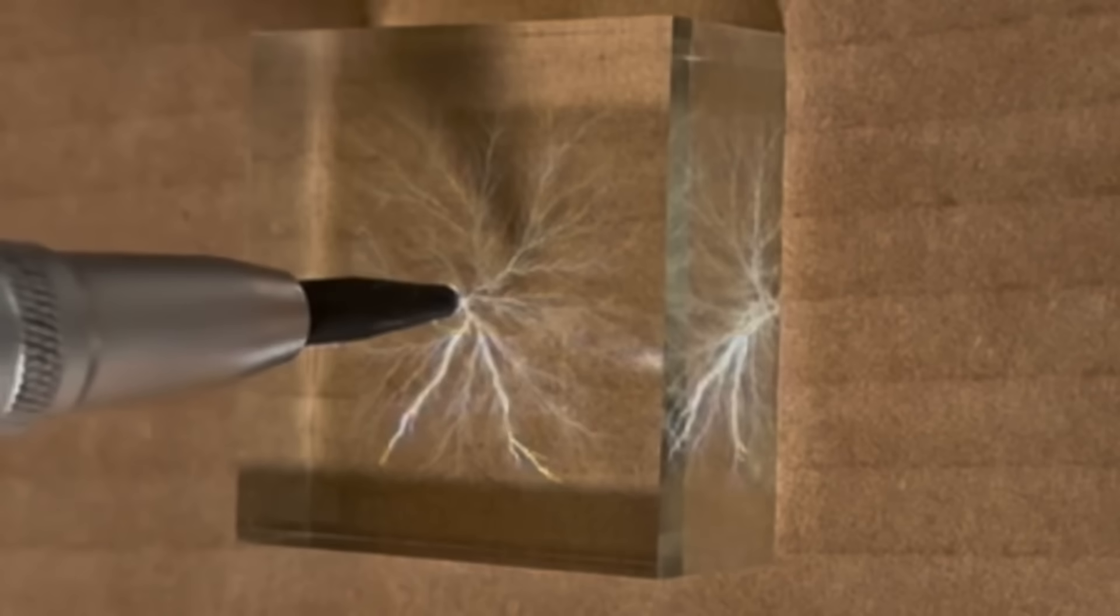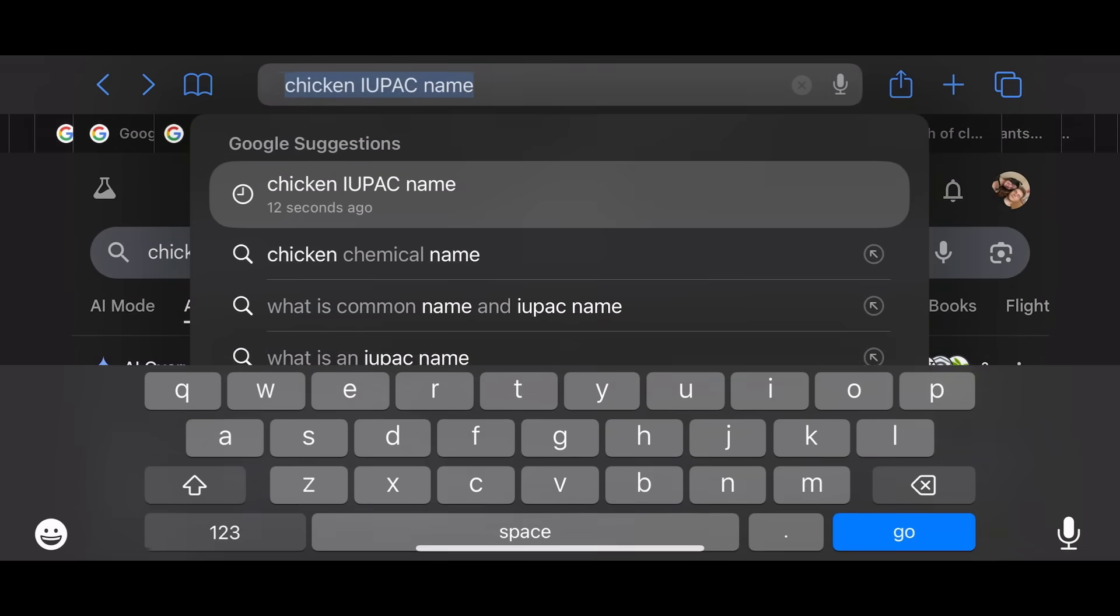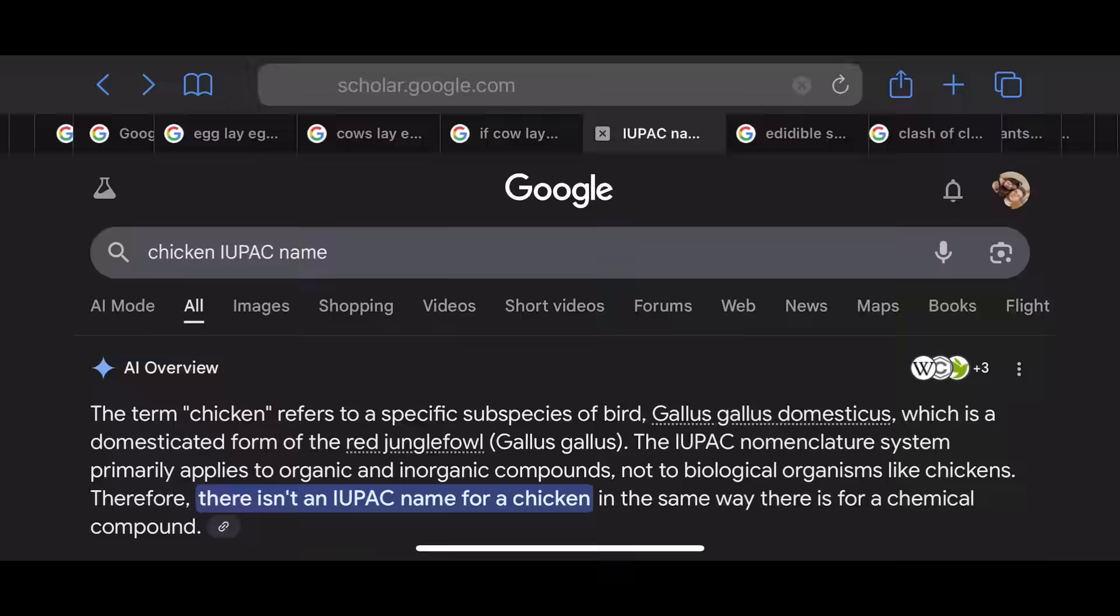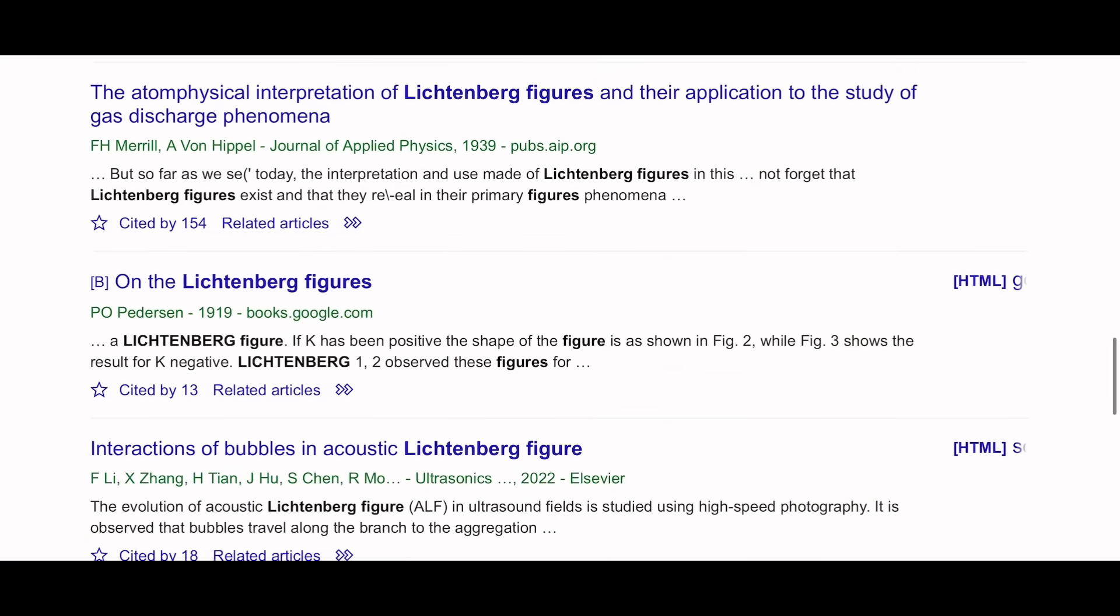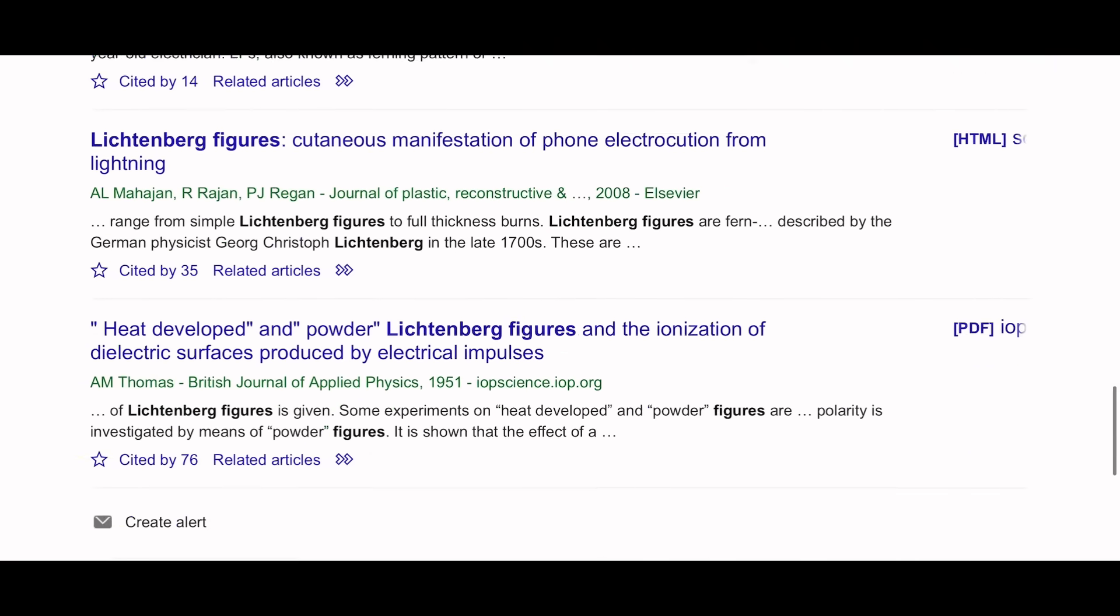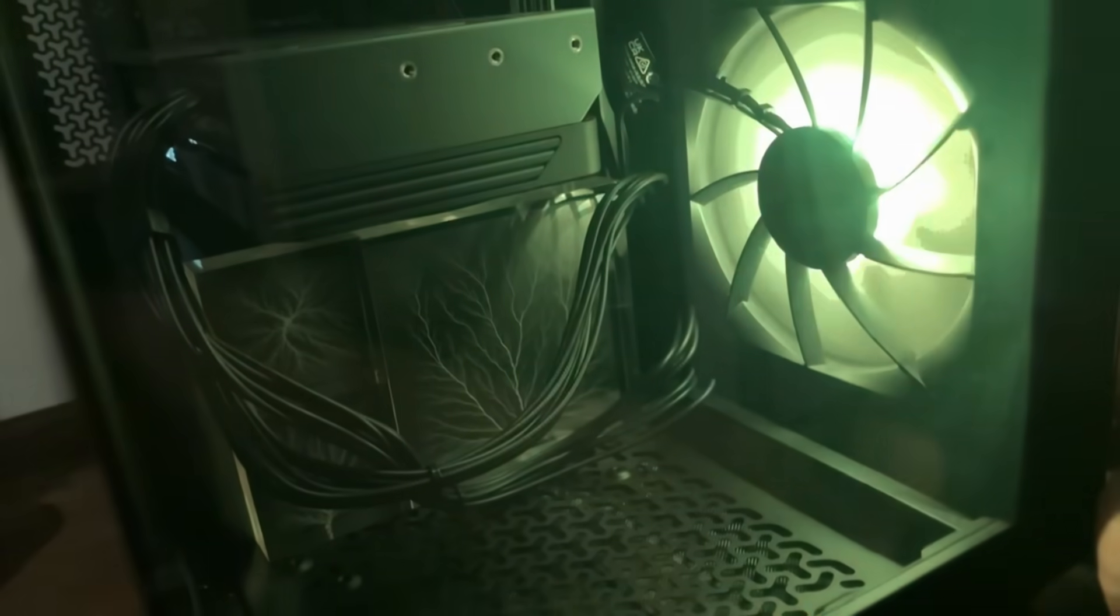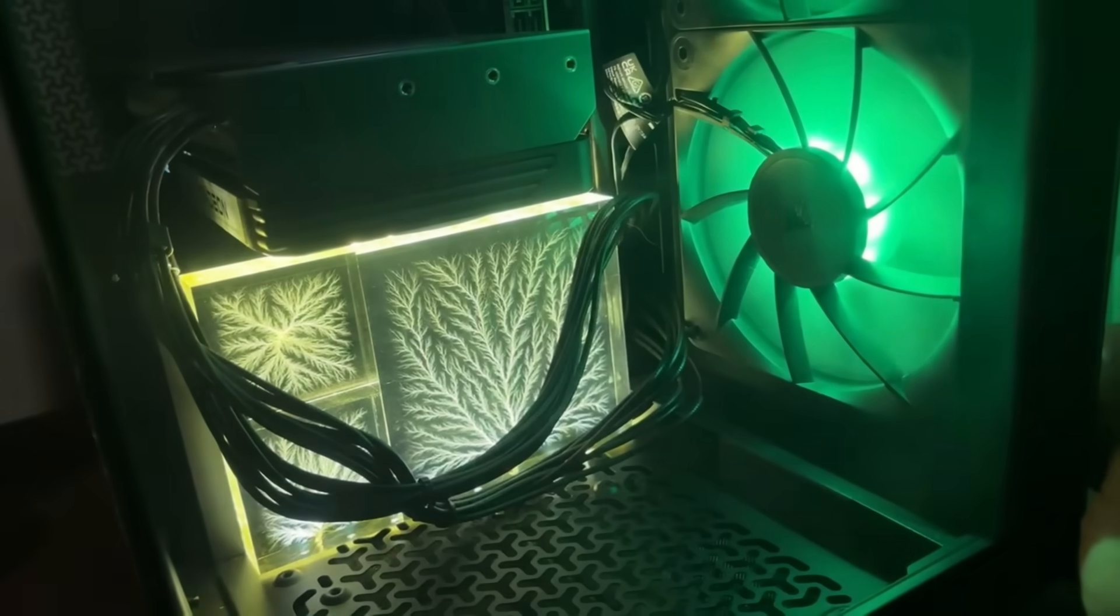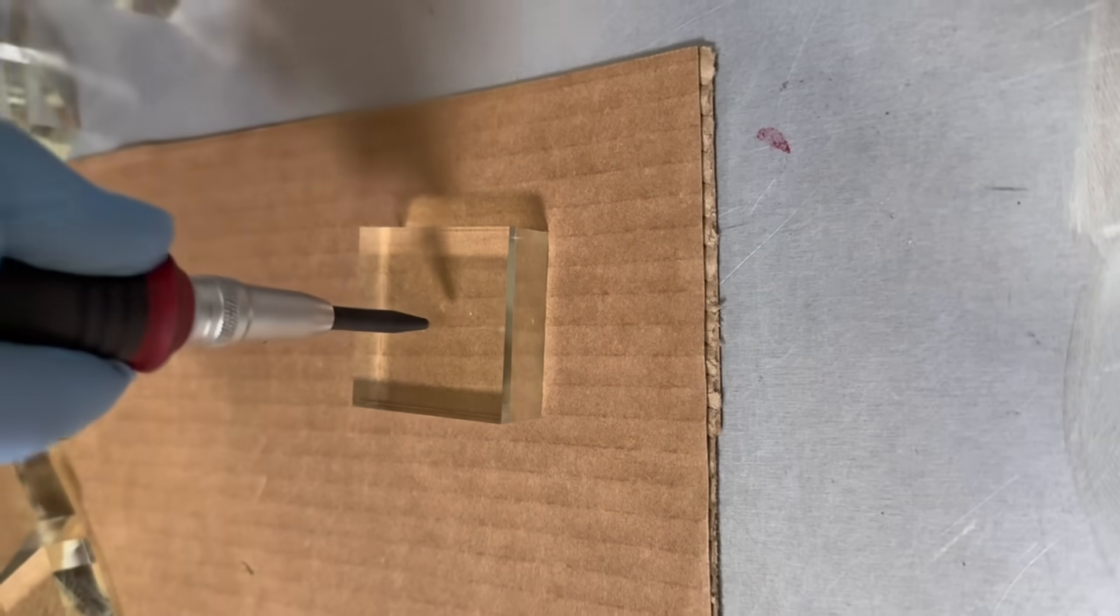While our primary use case for Lichtenberg figures is decor and art, the formation of Lichtenberg figures and the mechanisms by which they do so is a topic of active research. The formation is studied in a variety of materials such as air, insulative materials like acrylic, or even skin. So while we have a very large appreciation for the beauty of these figures, we may have an even larger appreciation for the underlying physics behind their formation. So let's go a little in depth and answer the question on how these are made.